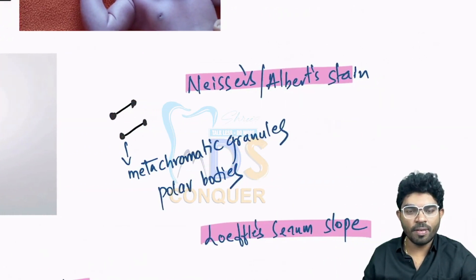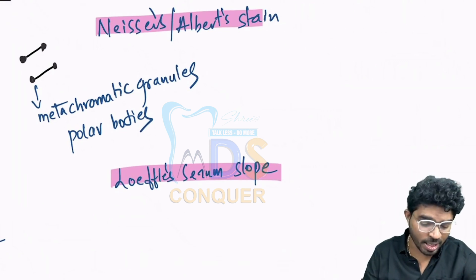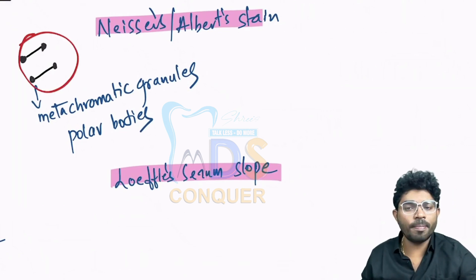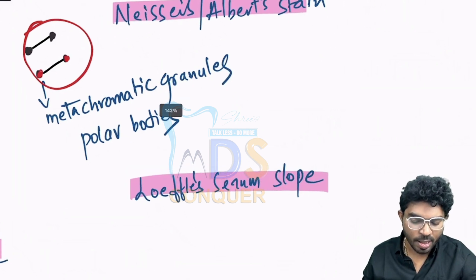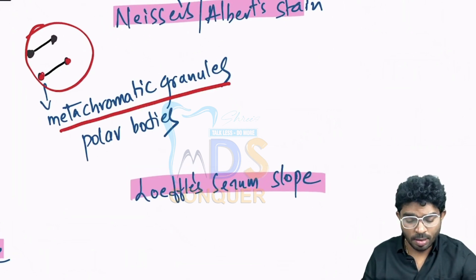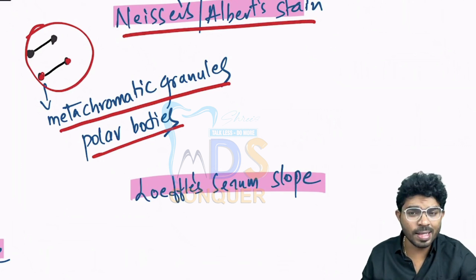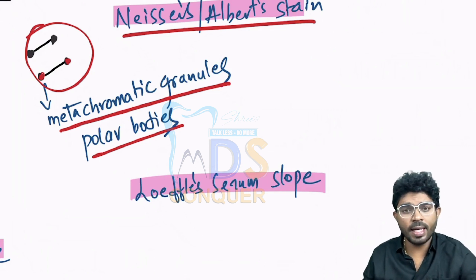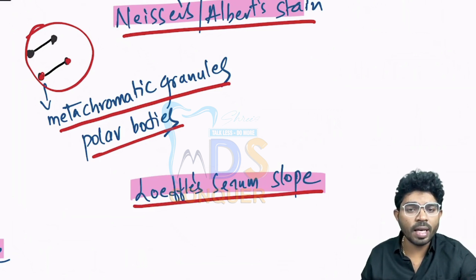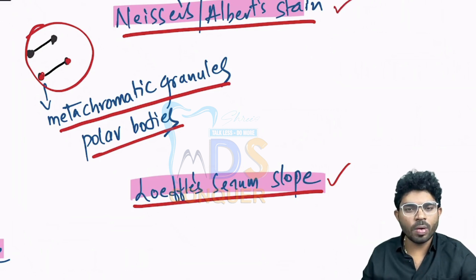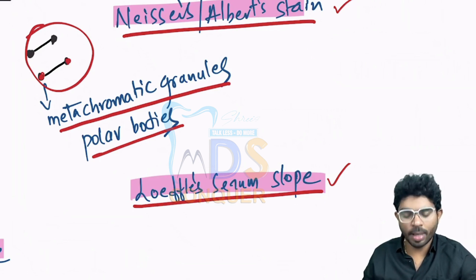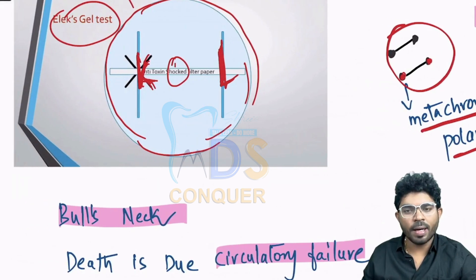They can ask a diagram-based question showing bacilli with polar bodies on both ends — called metachromatic granules with polar bodies. These are seen with Albert's stain or Nisser's stain, useful for the diagnosis of Corynebacterium diphtheriae. The medium useful for diagnosis is Loeffler's serum slope. In case-based questions, they may describe bacteria grown on this medium with a grayish pseudomembrane that is difficult or painful to remove — your answer should be Corynebacterium diphtheriae. Bull's neck is also seen in diphtheria, due to adenitis. The most common cause of death in diphtheria is circulatory failure.